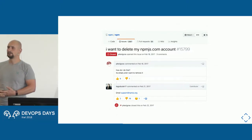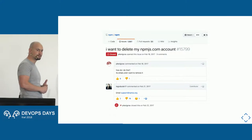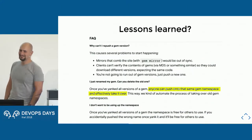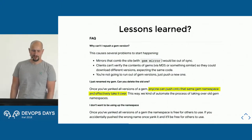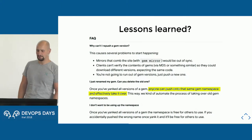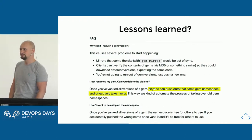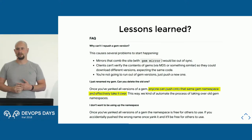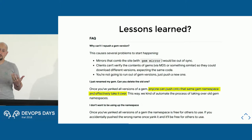What happens on other repositories? Here's an example from RubyGems: once you've yanked all versions of a gem, anyone can push onto that same namespace and effectively take it over. Ouch. So what's the situation with GitHub or Amazon S3 buckets? Interesting questions.